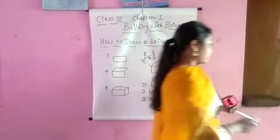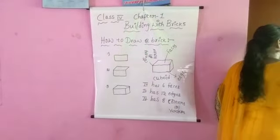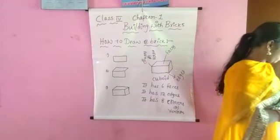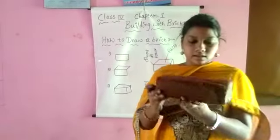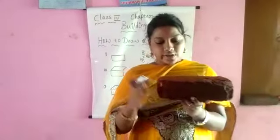I will show you a real brick. This is the cuboid shape — it has 6 faces.